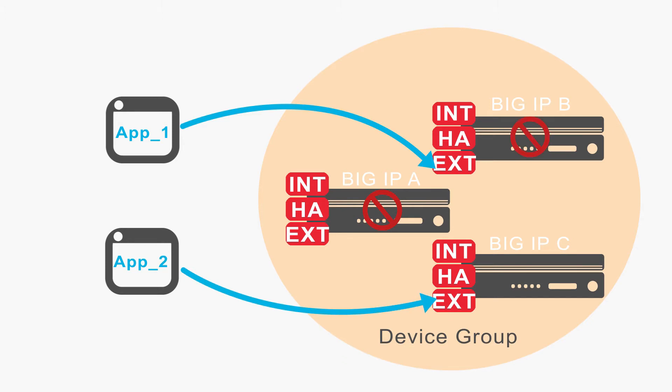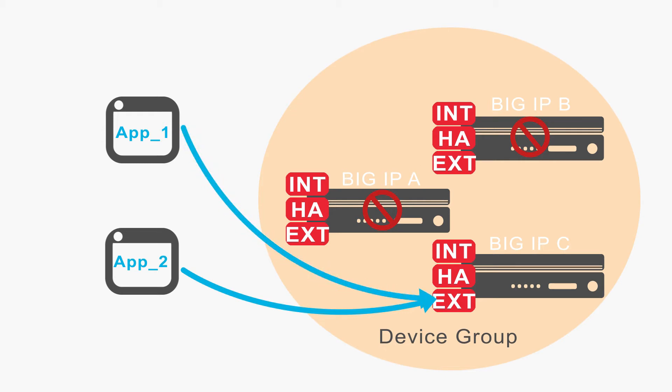Now, if a second BIG-IP system goes offline, its application flow can begin targeting the same device that the other application flow failed over to. When the original device for an application flow comes back online, that flow does not automatically fail back to it. If you don't want it to remain active on its new device, you can configure the system to automatically fail back the application flow to its original device, or you can manually cause the failback. Here, we've caused App 2 flow to fail back to its previous device, BIG-IP-A, while App 1 continues to target the device it failed over to.